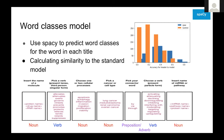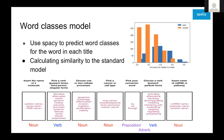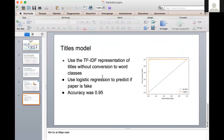Instead we took a step back and just tried to vectorize the words in the titles and then make a logistic regression over these word frequencies. This actually gave us a pretty good accuracy — around 95%. We think this still needs a lot of work and there might be some holes we missed, but it's a good start.